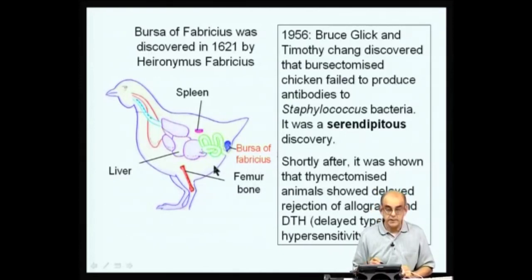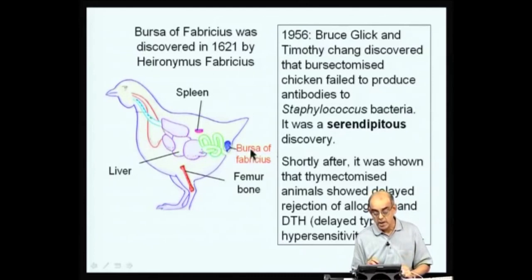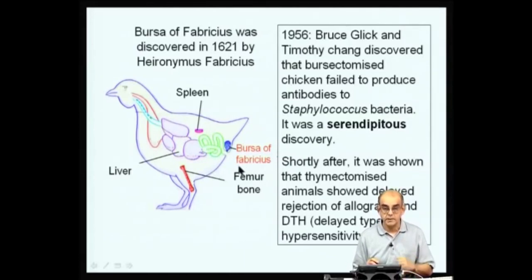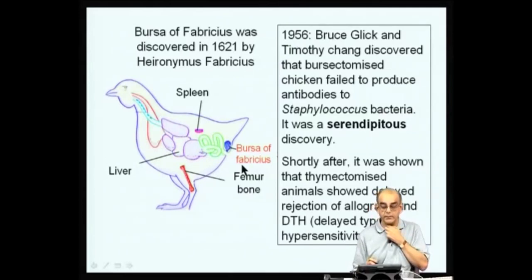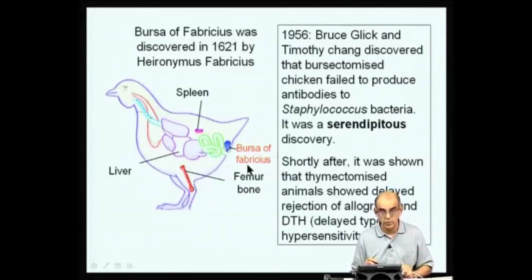Simultaneously, there were a lot of experiments to look at the function of the thymus. They would remove the thymus — and please note that all these bursectomy removal of the bursa or the thymus has to be done at a very early stage. Bursectomy has to be done soon after hatching, and thymectomy has to be done soon after the birth of the mouse pup — therefore it is called neonatal thymectomy. The thymus actually regresses in adult life, so if you remove the thymus from an adult, there is no effect on the immune response. Only if you remove the thymus from a neonate will you have effects on the various cells of the body.